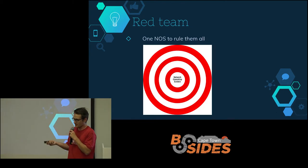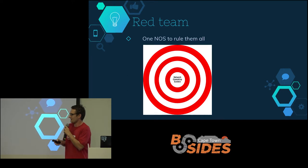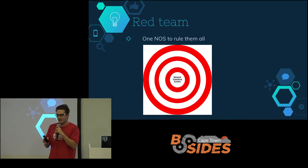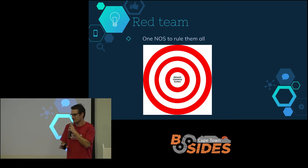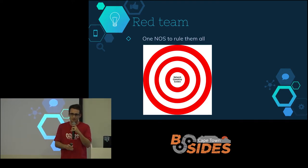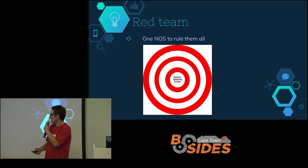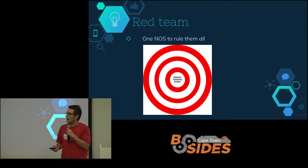Obviously the controller — the network operating system — becomes a big juicy target for hackers. So for red teams, if anyone were to compromise that network operating system, you can have a field day on that person's network. You literally control the entire network — you can reroute anything to wherever you want, kill networks, everything.